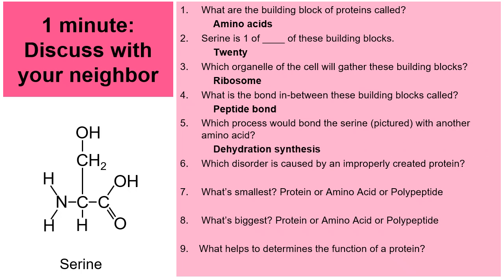Now, number six, which disorder is caused by an improperly created protein? That's sickle cell disease. Number seven, which of those three terms, protein, amino acid, or polypeptide is the smallest? Well, that would be the monomer, the amino acid. Number eight, which of those three terms is the largest or the biggest? Well, that would be a protein. And number nine, what helps to determine the function of a protein? Well, that would be its structure.